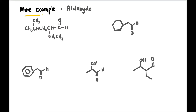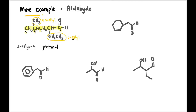Let's look at more examples for aldehyde. First, we find the longest carbon chain with functional group: one, two, three, four, five — the longest is five. For aldehyde, the functional group C double bond O — H is always at carbon one. So with five carbons the parent name is pentanal. It has substituents: methyl above and ethyl below, at positions two-ethyl and four-methyl. So the full name is 2-ethyl-4-methylpentanal.